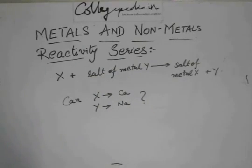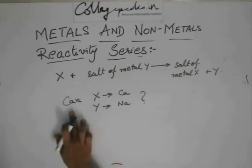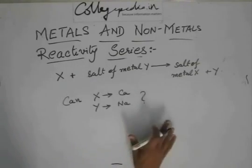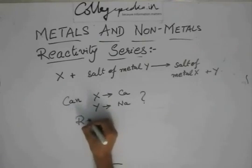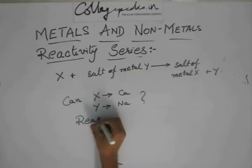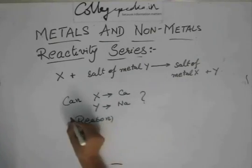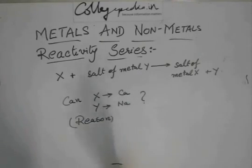Whenever there is a 'can' or 'yes or no' sort of question, you always have to give the reason. You can't just write yes or no. The reason is always implied — even though it is not stated in the question, you have to write the reason.